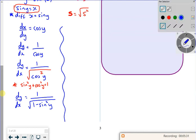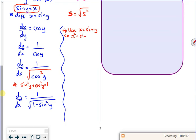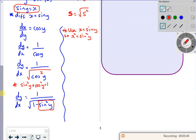So going back, I've got something now in terms of sine which is good. So I'm going to use x equals sine y. So x squared equals sine squared. So I'm going to replace the sine squared down here on the left with x squared. So what I get is dy/dx is 1 over the square root of 1 minus x squared.